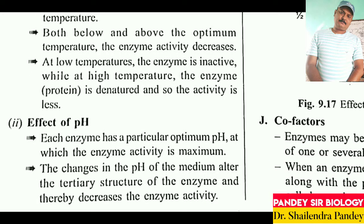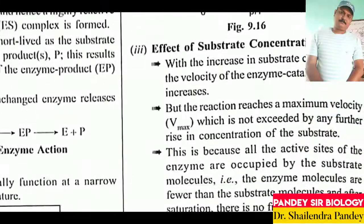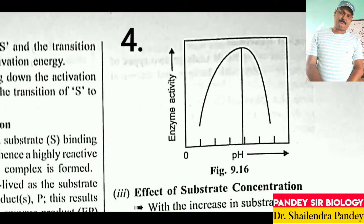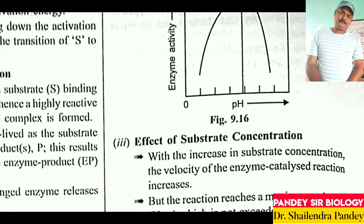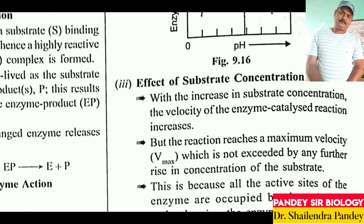Effect of pH: Each enzyme has a particular optimum pH at which enzyme activity is maximum. A change in the pH of the medium alters the tertiary structure of the enzyme and thereby decreases enzyme activity. A graph of pH versus enzymatic activity is shown here.